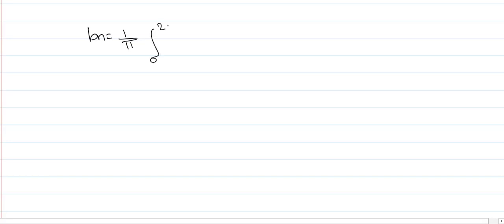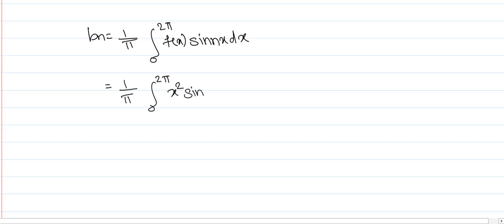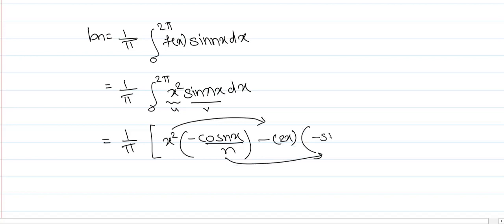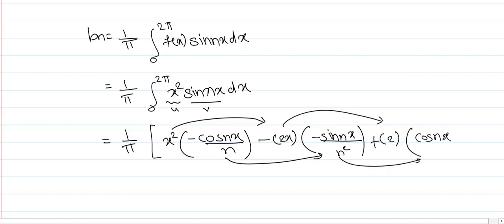Now we have to find the value of bₙ. bₙ is given by (1/π) ∫₀²π f(x) sin nx dx. Substituting f(x) = x², this becomes (1/π) ∫₀²π x² sin nx dx. Again apply Bernoulli's u·v rule. Here u = x² and v = sin nx. So the integral gives: x² · (−cos nx/n) − 2x · (−sin nx/n²) + 2 · (cos nx/n³), with limit 0 to 2π.